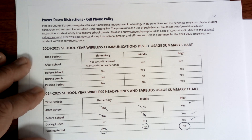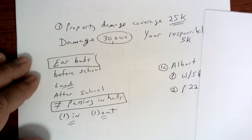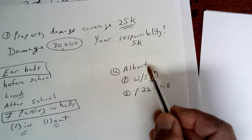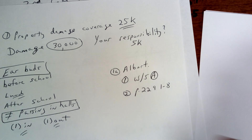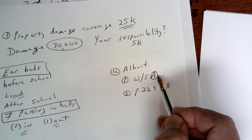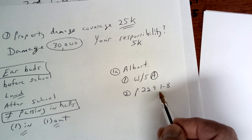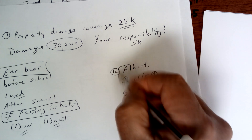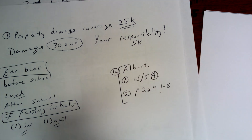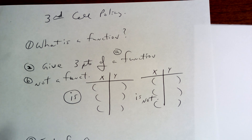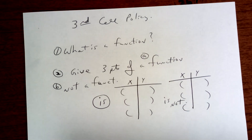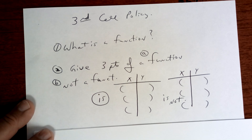Today you're doing Albert IO week six. You're doing worksheet A if you haven't already done it, and you're doing problems one through eight on page 229. Make sure you have all of this completed — I will check today.